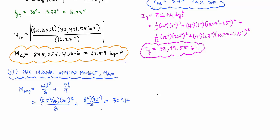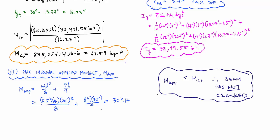Since M_applied (30 kip-ft) is less than the cracking moment Mcr (69.59 kip-ft), the beam has not cracked. Hope you enjoyed that reinforced concrete cracking moment example — take it easy, Structure Free.